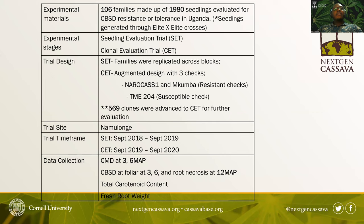The timeframe for the experiment was between 2018 to 2020. We collected data on cassava mosaic disease, CBSD severity at 3, 6, and 12 months, total carotene content, and harvest rates.